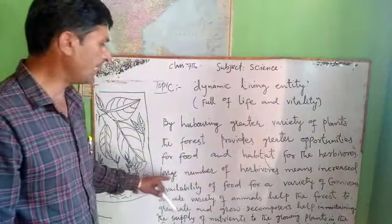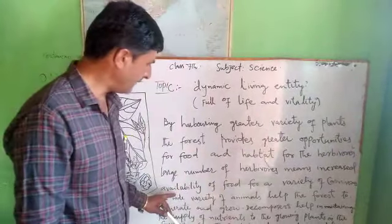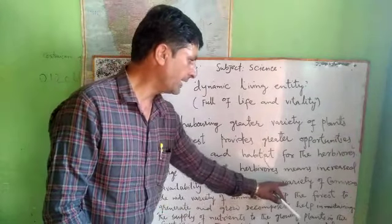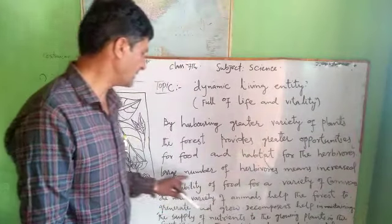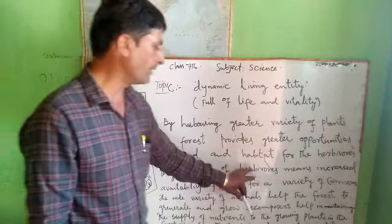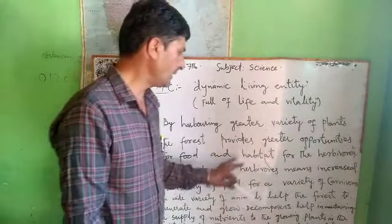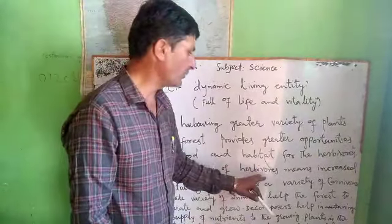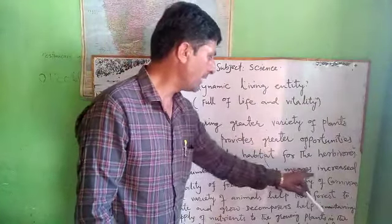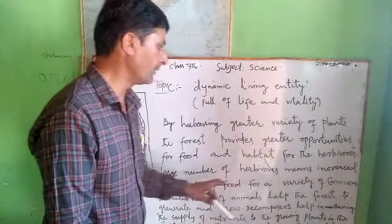The lower number of herbivores means increasing availability of food for a variety of carnivores. This means that when the number of herbivores decreases, more food becomes available for carnivores.